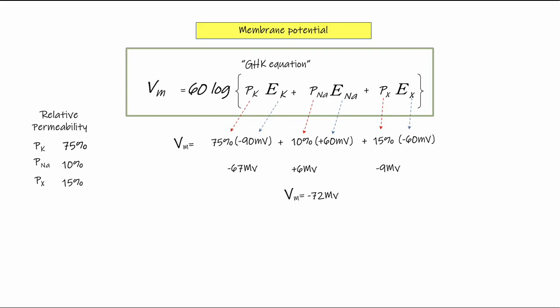We can change these relative permeabilities by opening or closing different channels. If we open up sodium channels to make the membrane more permeable to sodium, we increase sodium's relative permeability to 75% and drop potassium down to only 10%.